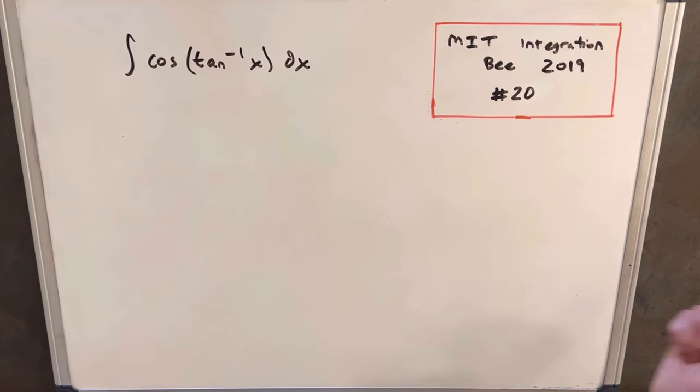Okay, so we really don't know how to integrate this directly. I did have a thought of using integration by parts, but let's actually try a u substitution instead.